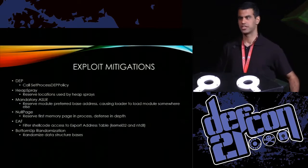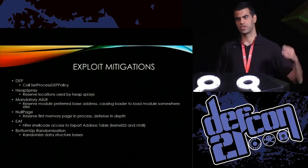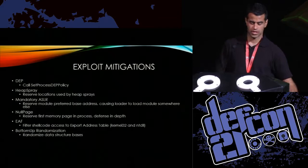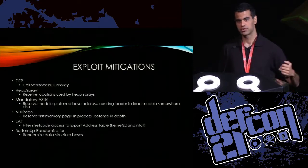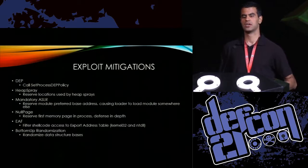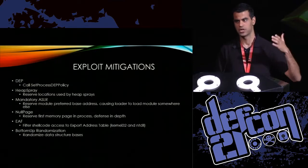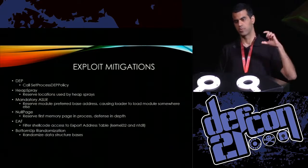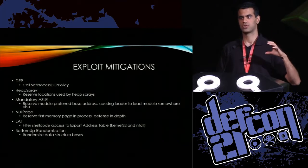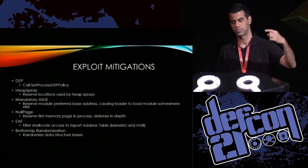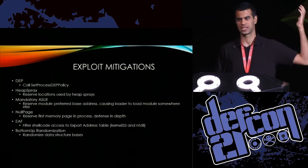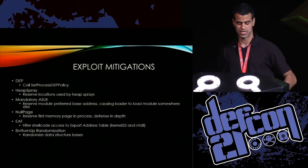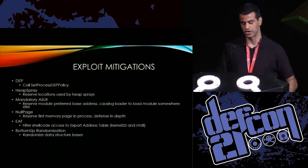We have the null page mitigation where we reserve page zero — the page at address zero — so you can't abuse null pointer dereferences. The EAF mitigation — Export Address Table Filtering — where if shellcode tries to read the export address table, we set a hardware read breakpoint on it to make sure EIP, the x86 instruction pointer, doesn't point to some random place like the heap. And bottom-up randomization where we randomize different data structures in the process's address space.